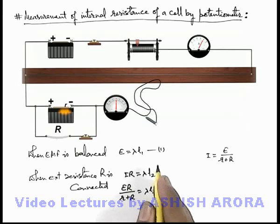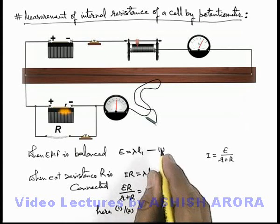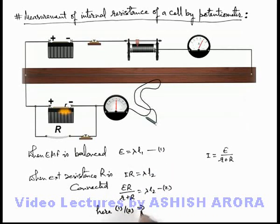Now in this situation, if we divide the two equations, here, if we write 1 by 2, if these two equations are divided, this will result as r plus R by R is equal to L1 by L2.